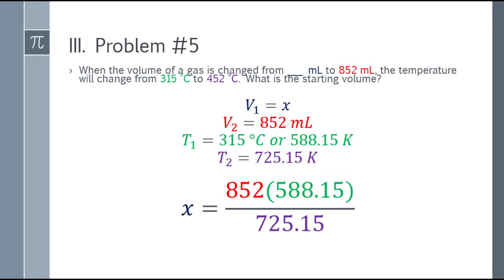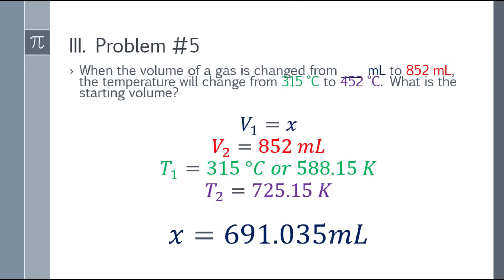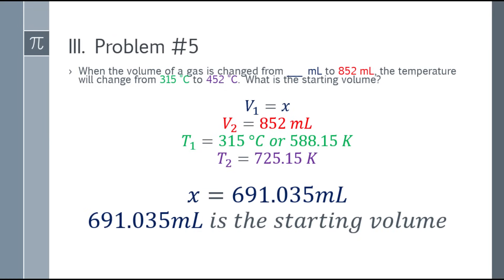Now multiply, or cross multiply. X equals 852 multiplied by 588.15. Divide that answer by 725.15, and you will get an answer of 691.035 mL. And that is the final answer. That's the starting volume at 691.035 mL.